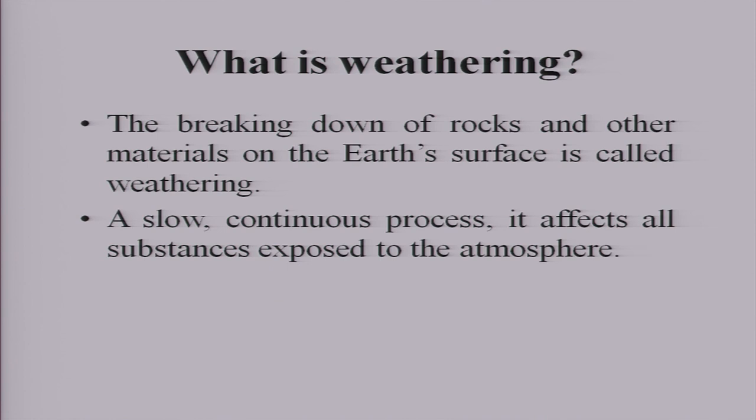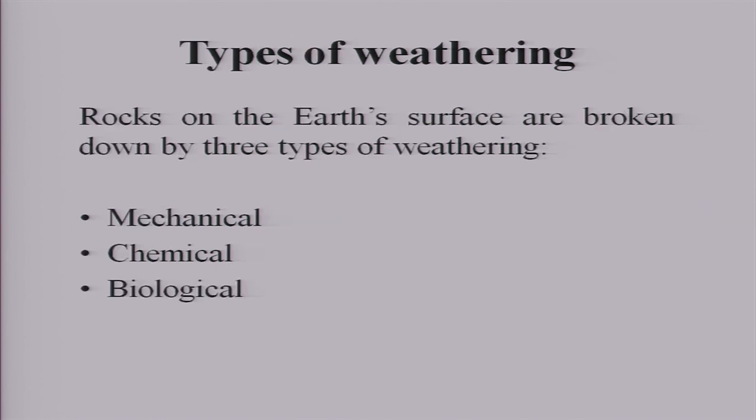The breaking down of rocks and other materials on the earth's surface is called weathering. It is a slow, continuous process and happens to all substances as they are exposed to the atmosphere. There are three kinds of weathering: mechanical, chemical, and biological. We have classified these three types just to understand them, but in nature these three types continuously interact with one another and sometimes we cannot distinguish exactly which type of weathering has occurred.